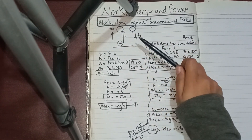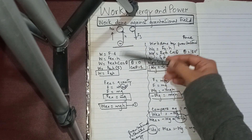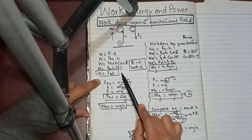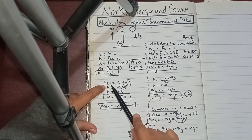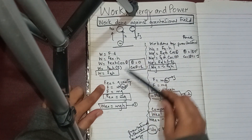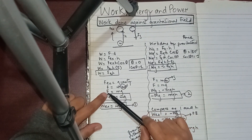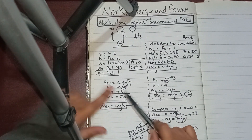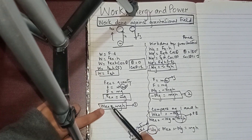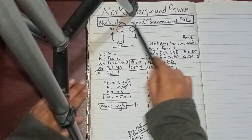To summarize: we first found the work done by the external force. Work equals force × displacement. Since the external force and displacement are both upward, the angle is zero, giving W_ext = Fₑ × h. Since acceleration is zero, the external force equals the gravitational force, so F_ext = mg. Therefore, work done by external force = mgh. This is Equation 1.